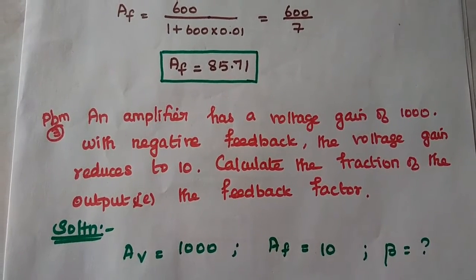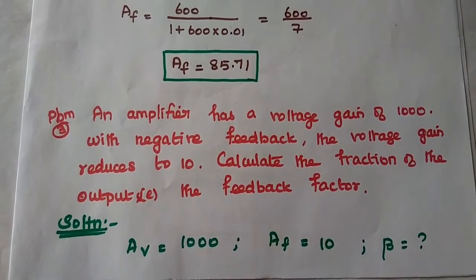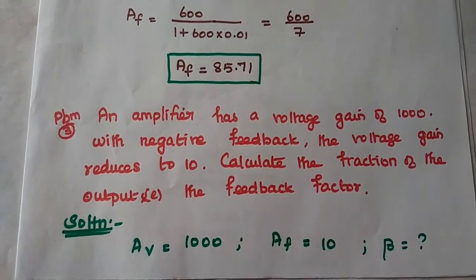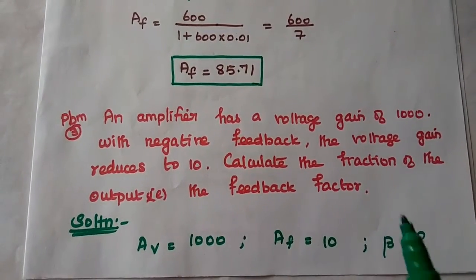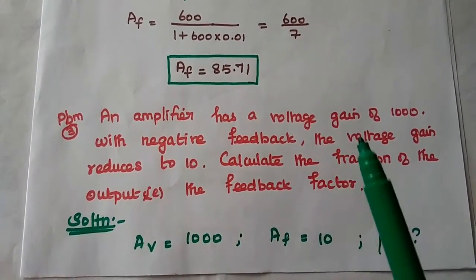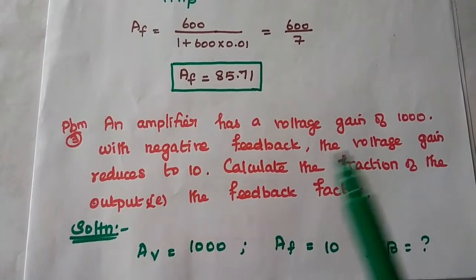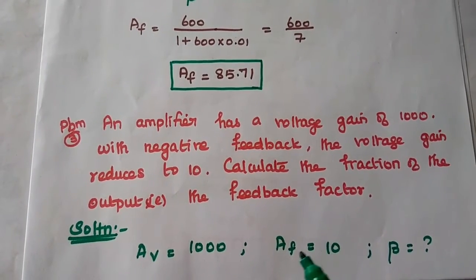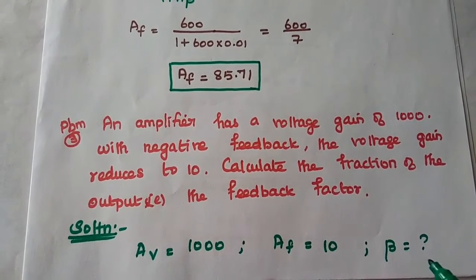An amplifier has a voltage gain of 1000 with negative feedback; the voltage gain reduces to 10. Calculate the fraction of the output that is fed back — the feedback factor. Here AV = 1000 and the gain with negative feedback AF = 10. We need to find the feedback factor β.